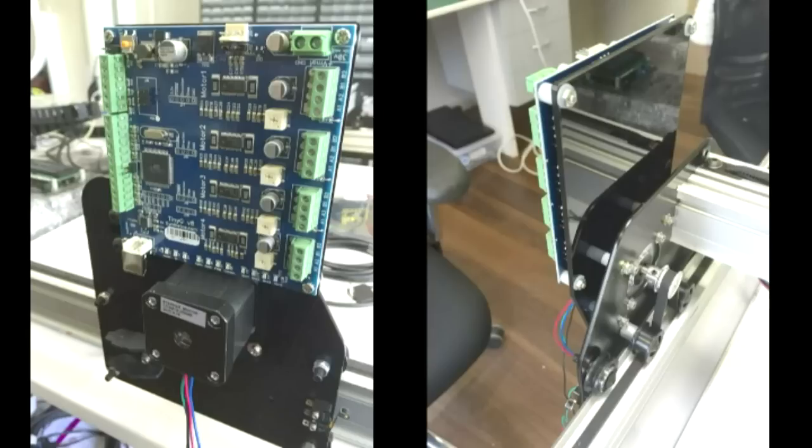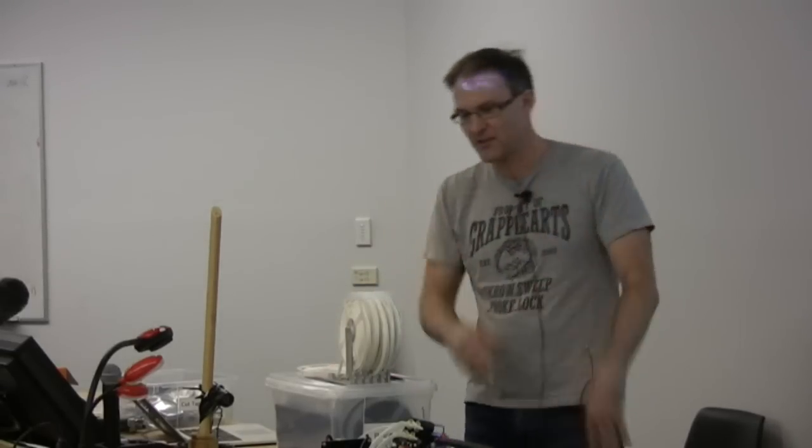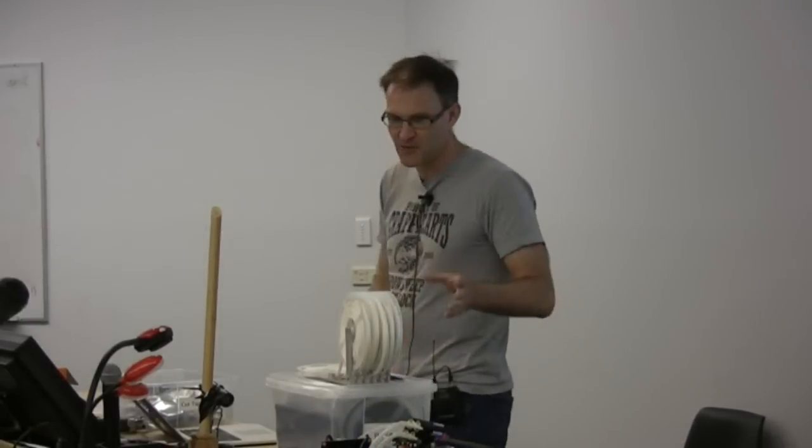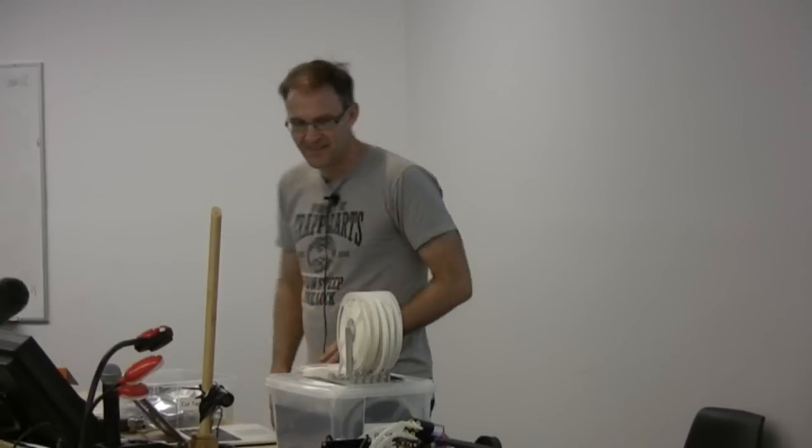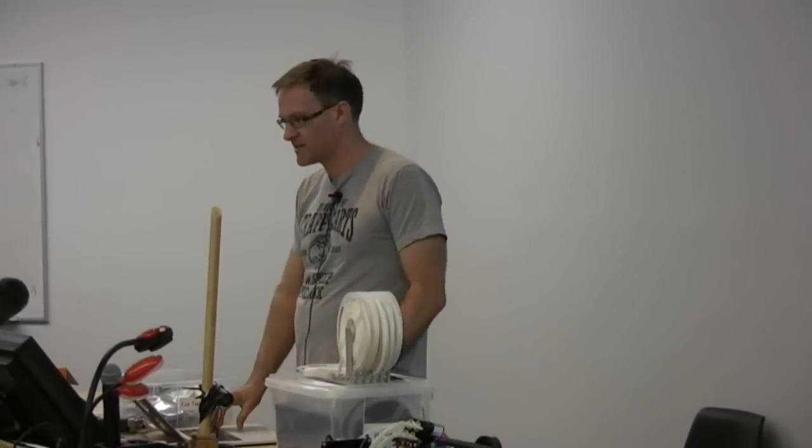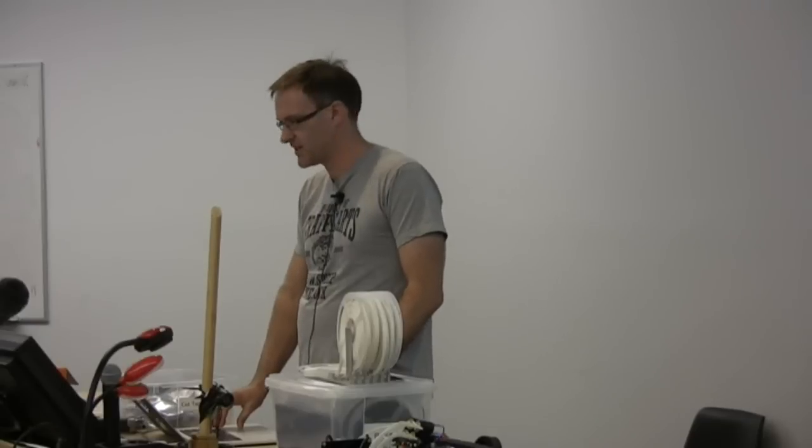And there's a few hours of assembly and tweaking tensions on belts and things. And you've got a chassis that can do most of the job. So I then added the Tiny G motion controller, which has four output channels for driving steppers. And I mounted that on the carriage itself. Originally, I was going to build an external control box and then run all the cabling onto the machine. I thought it'd be so much neater if you just put the controller on the machine.